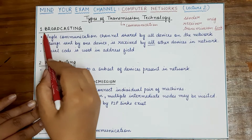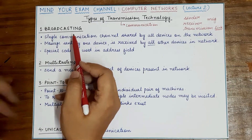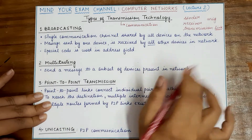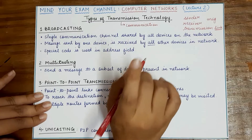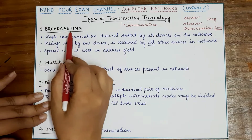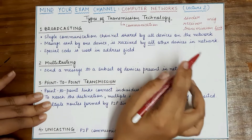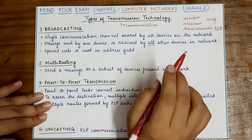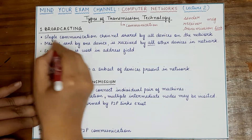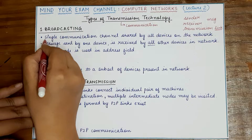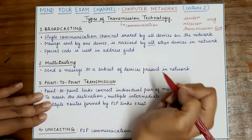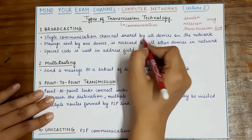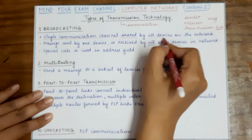The first classification is broadcasting or broadcast links. Broadcasting means sending a single message to everyone. There will always be one sender, and all other devices present on the network will receive the message sent by the sender. In broadcasting, there is a single communication channel that is shared by all the devices.